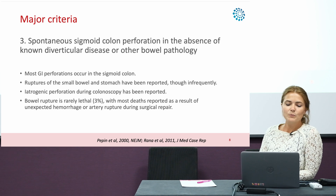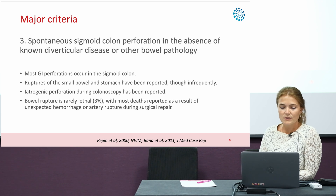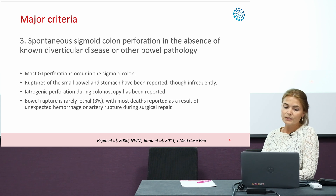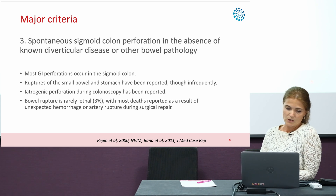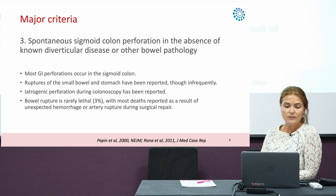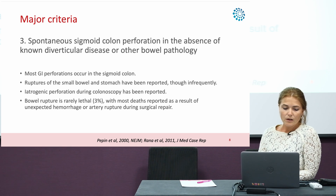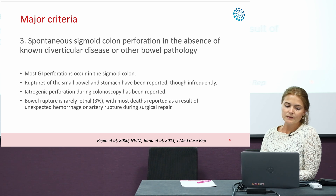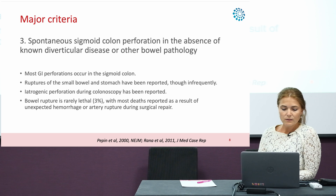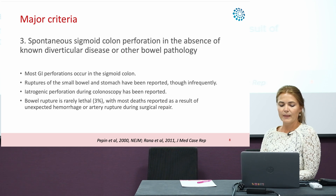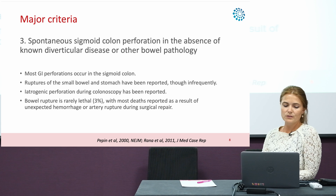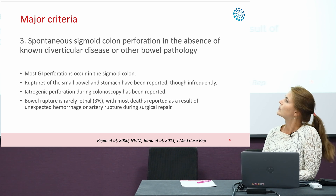The third major criterion is spontaneous perforation of the sigmoid colon in the absence of known diverticular disease or other bowel pathology. Most gastrointestinal perforations occur in the sigmoid colon, though perforations can take place anywhere in the gastrointestinal tract. Iatrogenic perforation during colonoscopy has also been reported. Bowel rupture is rarely lethal, only 3%, with most deaths reported as a result of hemorrhage or arterial rupture during surgical repair.